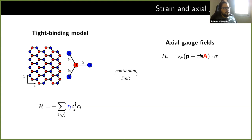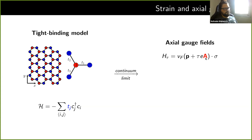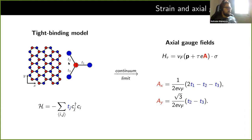This gauge field is pretty much like a magnetic field, but the key difference is that there is a tau-dependence, where tau is the valley index. For each valley, the sign of this gauge field changes, making things valley-dependent — and you might already think that this is a route to get valley-dependent phenomena. This gauge field depends on these hoppings, so there's a nice relation: you can map the tight-binding model to the continuum model using those relations.